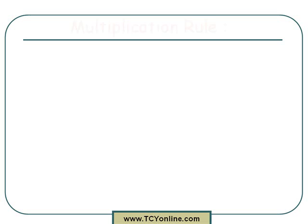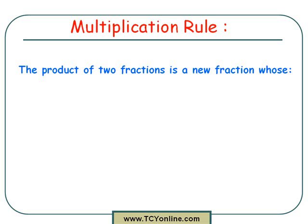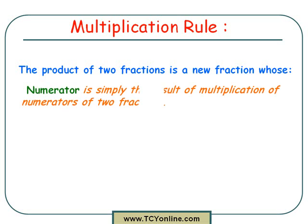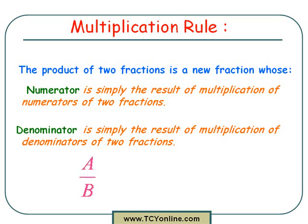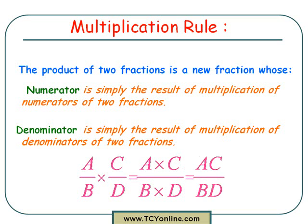For this, let's learn about the multiplication rule. According to the multiplication rule, the product of two fractions is also a fraction, whose numerator is simply the multiplication of the numerators of the two fractions, and denominator is simply the multiplication of the denominators of the two fractions. For example, we have a fraction a over b and we multiply this by c over d. Simply multiply the numerators a and c, as well as the denominators b and d. So a times c gives ac, while b times d gives bd. So our new fraction will be ac over bd.